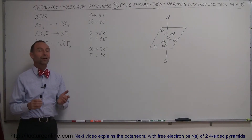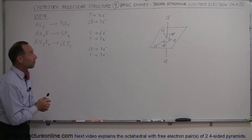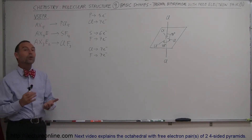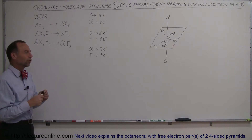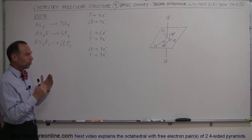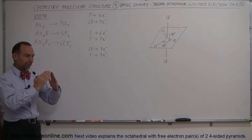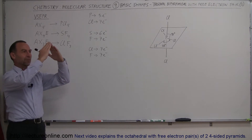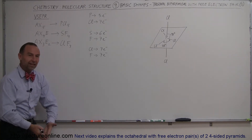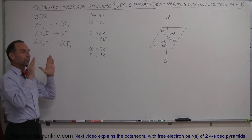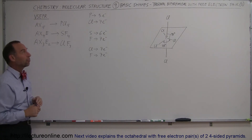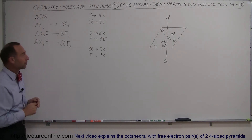Welcome to Electron Line. Our next basic shape we're going to talk about is what we call the trigonal bipyramidal shape. Those are basically two three-sided pyramids glued base to base — a pyramid sticking up and a pyramid sticking down with the two bases together. That's why the name trigonal bipyramidal.